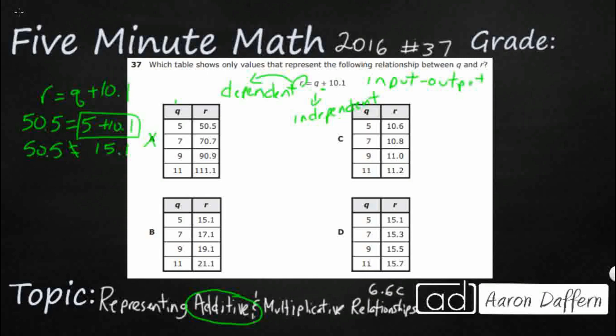And that is really what we need to do here. So we need to just plug these in. And so let's write this again, r equals q plus 10.1. And our first r is 15.1. So 15.1 equals first q is 5 plus 10.1. Well, we have already figured out that 5 plus 10.1, that does equal 15.1. So that looks like that checks out. Let's look at our next one. 17.1 equals our second q is 7 plus 10.1, 7 and 10.1, that makes 17.1. So this definitely checks out.